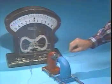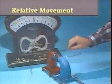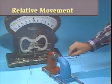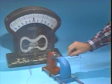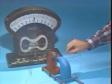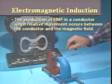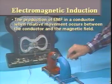This movement, when the flux lines are cut by the conductor or the conductor is cut by the flux lines, is called relative movement. Without relative movement between conductor and flux lines, an EMF will not be generated. Electromagnetic induction, then, is more properly defined as the production of EMF in a conductor when relative movement occurs between the conductor and the magnetic field.